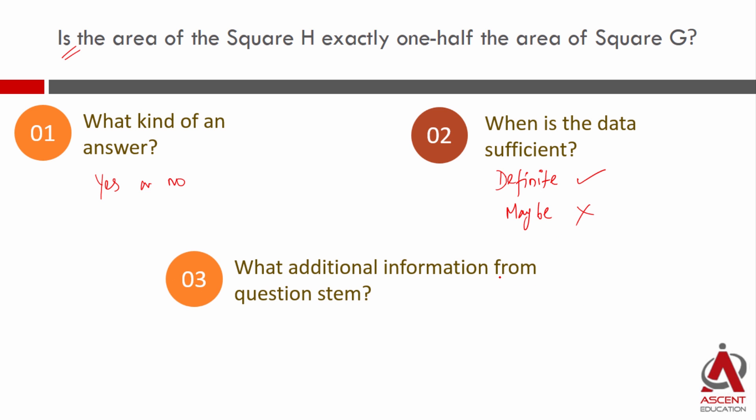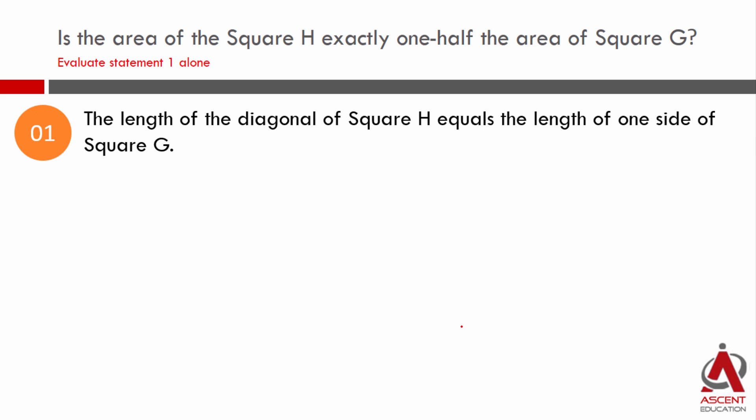What information do we have from the question stem? Side of square G is equal to 4 cm. This is the question stem. What we will do is, we will evaluate each of the statements one by one. What we have at statement one is, the length of the diagonal of square H is equal to the length of the side of square G.